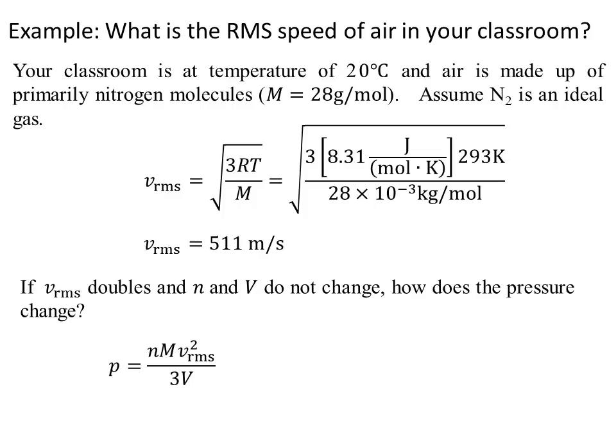Well, we have that P is equal to the number of moles times the mass times the RMS squared divided by 3 times the volume. But the only thing changing is the V_rms, and it comes in as a square. So the new pressure will be 4 times the old pressure since we're doubling the V_rms from the old.